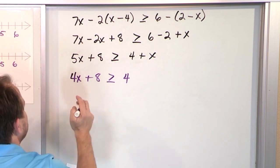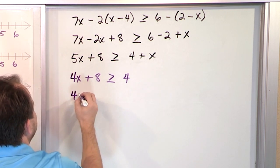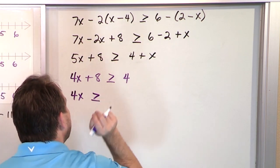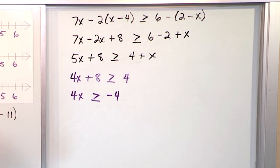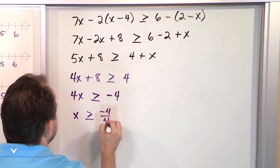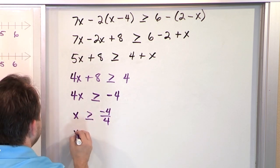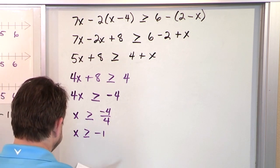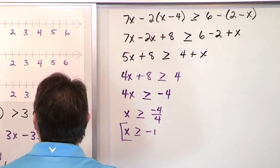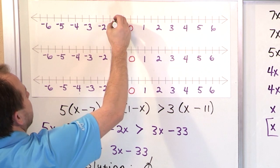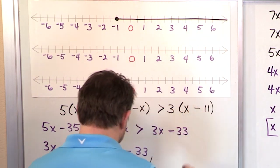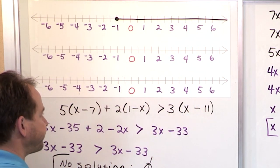Now subtract 8 from both sides, leaving 4x on the left. On the right, 4 minus 8 is negative 4. Then divide both sides by 4, and we get x greater than or equal to negative 1. Since it's greater than or equal to negative 1, we put a solid circle at negative 1 on the number line and shade all values to the right.